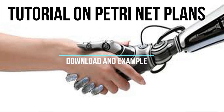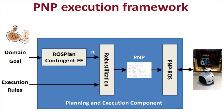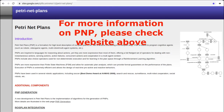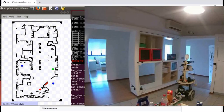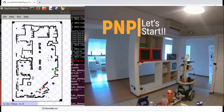Hello everyone! Today I will be showing you how to download the PetriNet Plants PMP library and test an example of its applications. PetriNet Plants, PMP for short, is a formalism for high-level description of complex plants — the set of actions interacting in a complex way. PMP is useful to program cognitive agents such as robots, video game agents, multi-robot or multi-agent systems, among many other applications. We look forward to seeing your robotics projects and other applications with the PMP library.